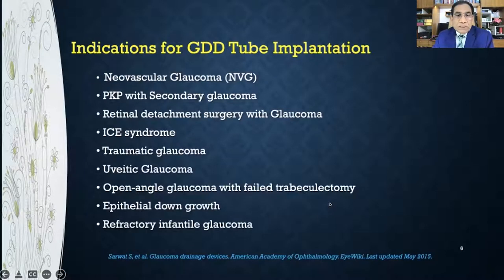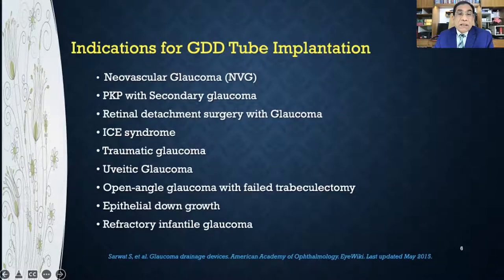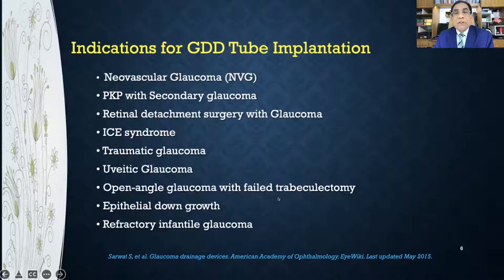There are many indications for glaucoma drainage implantation. Some cases like neovascular glaucoma, post-surgical cases like PKP, refractive adjustment surgery, iridocorneal endothelial syndrome, traumatic glaucoma, inflammatory glaucoma, failed trabeculectomy, and refractory infantile glaucoma are good cases for GDD because trabeculectomy does not work well in these cases.